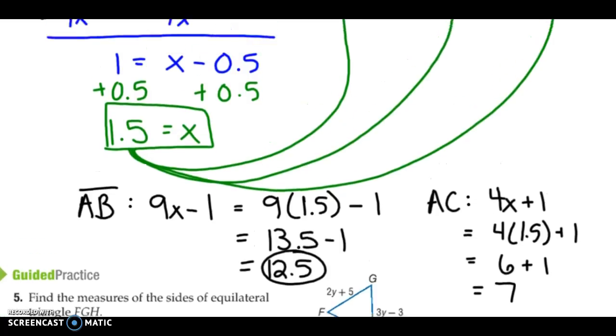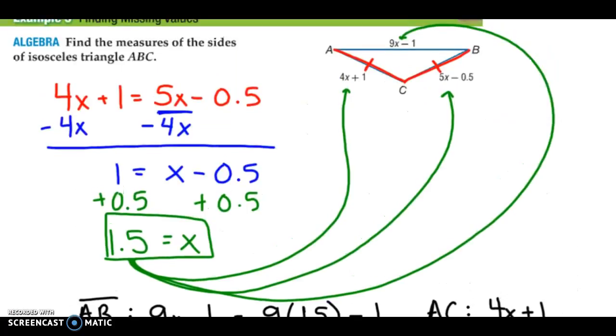And without having to do BC, I can know that it's going to be 7. How do I know that? AC and BC have the same length. If AC is 7, BC has to be 7 as well. So my sides are 7, 7.